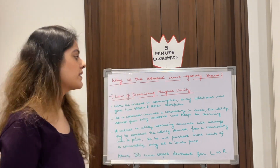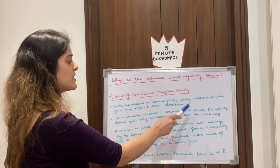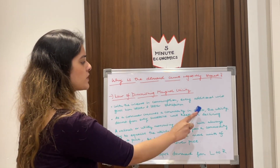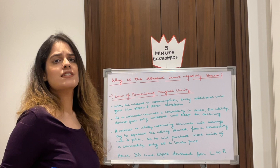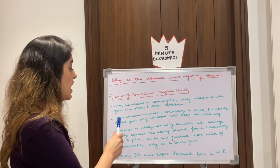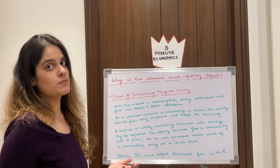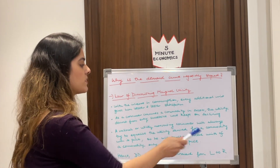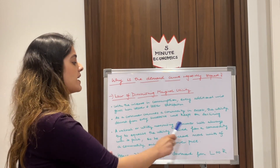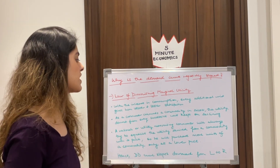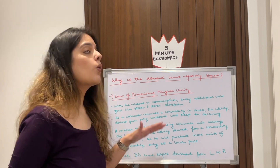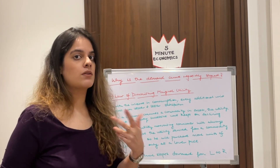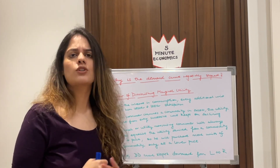The Law of DMU states that as we consume more of a commodity, the satisfaction derived from every additional unit keeps on decreasing. With the increase in consumption, every additional unit gives lesser and lesser satisfaction. As a consumer consumes a commodity in excess, the utility derived from every successive unit keeps on declining.